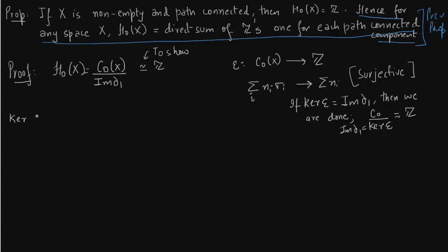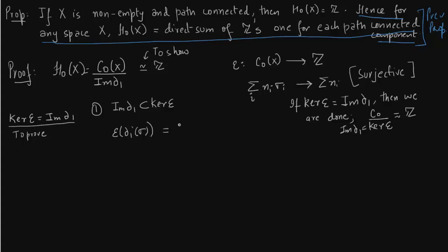We need to show that the kernel of E equals the image of delta_1. First, we show the image of delta_1 lies in the kernel. We take an element of the boundary map delta_1, apply E to it, and show the result is 0. Applying the boundary map: we are in C1, which consists of edges. There is an edge from V1 to V2, so applying the boundary map gives sigma(V1) minus sigma(V2). Applying E, we get 1 minus 1 equals 0, since both coefficients are 1. So the first part is done.